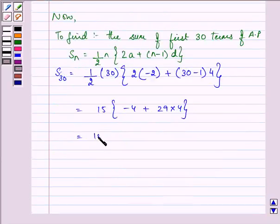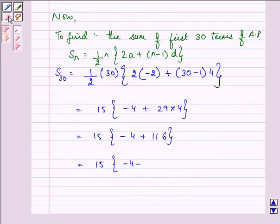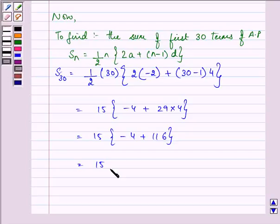Using the concept of BODMAS we have 15 into minus 4 plus 116 will give us the value as 112 and the product comes out to be 1680.